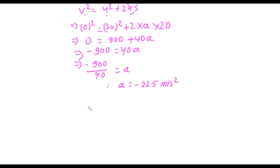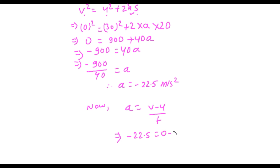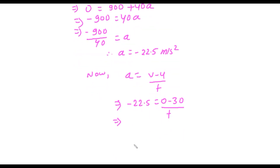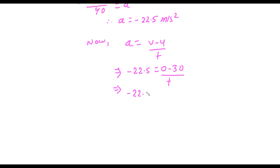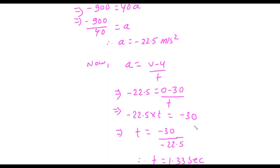The acceleration is −22.5 meters per square second. Now using a = (v − u) / t, we have −22.5 = (0 − 30) / t. By cross multiplication: −22.5 × t = −30, so t = −30 / −22.5, which gives t = 1.33 seconds.